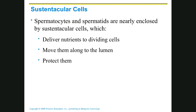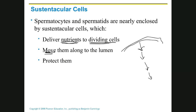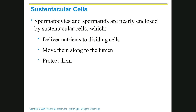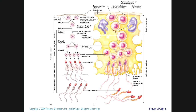Spermatogonia were there before puberty, so they're considered self. But secondary spermatocytes, spermatids, and sperm are considered non-self—they're foreign and must be protected by the sustentacular cells. Beyond protection, sustentacular cells also provide nutrients, nourishing these developing cells. They also physically move the cells from the wall toward the lumen. So these cells are really important.